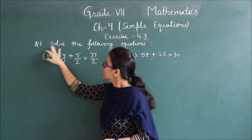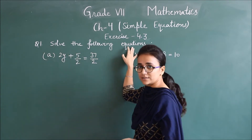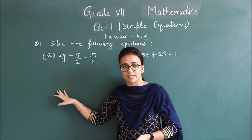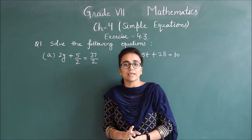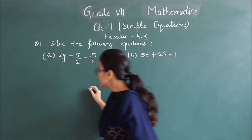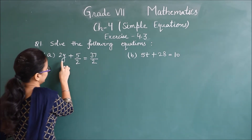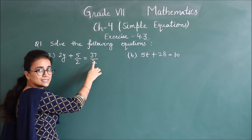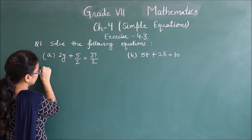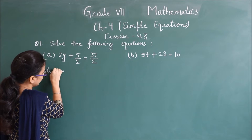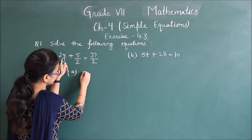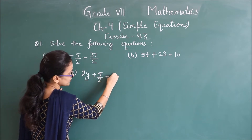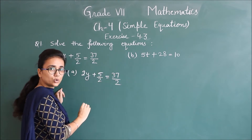First question is: solve the following equations. इन given equations को solve करना है, जैसे हमने 4.2 में किया था। देखो ध्यान से। First part है: 2y plus 5 upon 2 is equals to 37 upon 2.